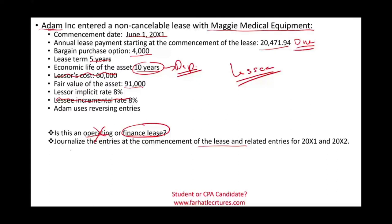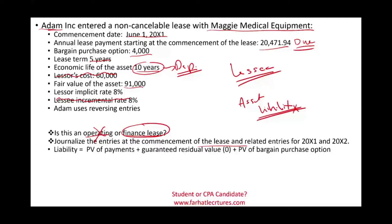Let's start by establishing the liability. When you have a lease, you're going to debit an asset and credit a liability. The question is: how much is the liability? We compute the present value of the payments — which are an annuity due — plus the present value of any guaranteed residual value (there is none here) plus the present value of the bargain purchase option (which we do have).